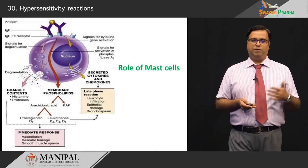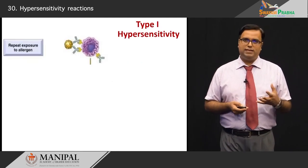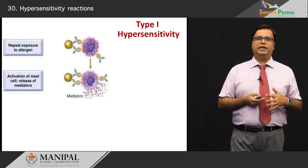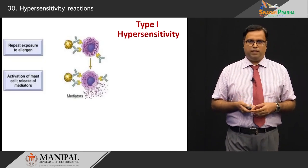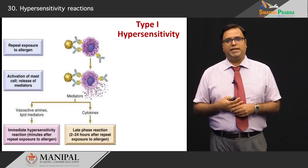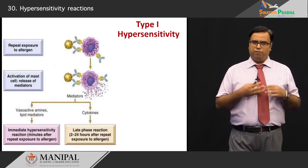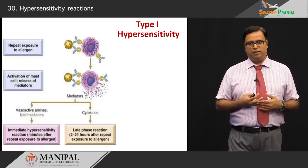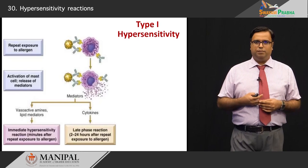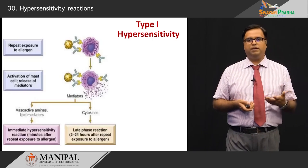Once the mast cells bind IgE molecules on their surface, they immediately degranulate and release all their substances. This is a sentinel event — what happens downstream is a release of vasoactive amines and lipid mediators which brings in the typical triad of reactions within minutes after repeat exposure to the same antigen. Cytokines are released as a late phase reaction maybe 2 to 24 hours later, and upon repeat exposure to allergens, the reaction recurs.